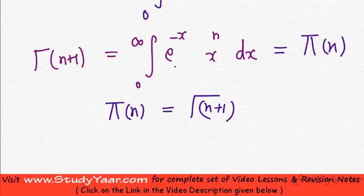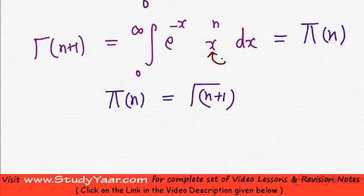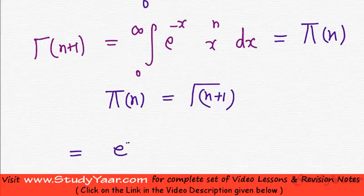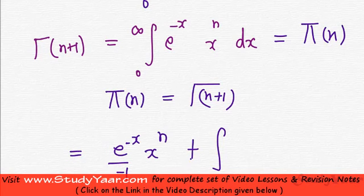Now let's analyze gamma of n plus 1, also written as pi of n. I want to integrate this by parts — I would like to integrate the exponential term and differentiate the power term. Integrating e raised to power minus x gives e raised to power minus x upon minus 1. Applying integration by parts gives minus e raised to power minus x times x raised to power n, plus e raised to power minus x times n times x raised to power n minus 1, dx.